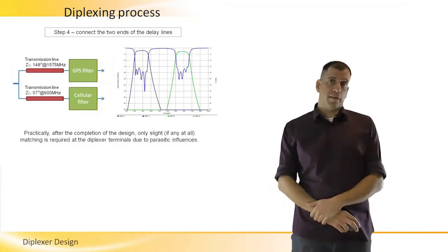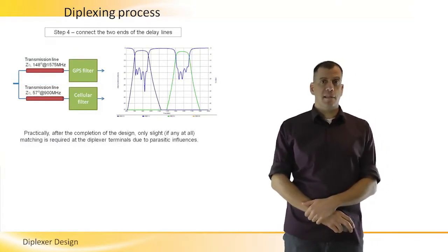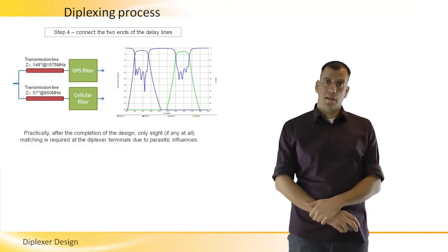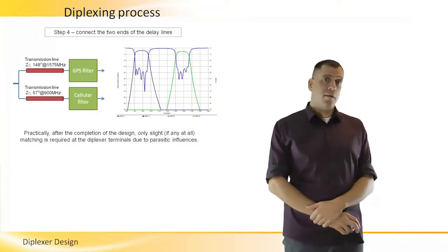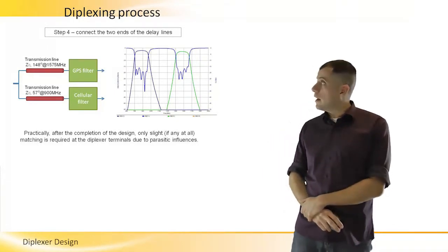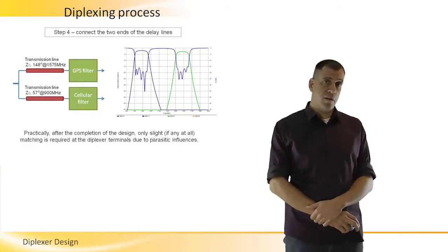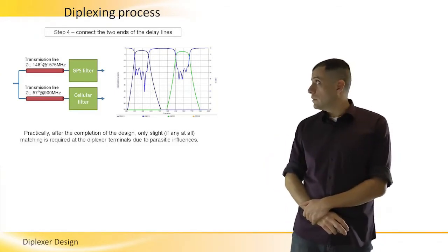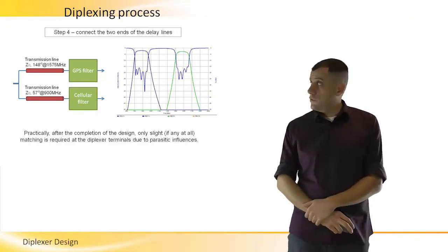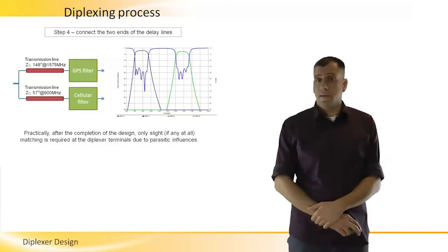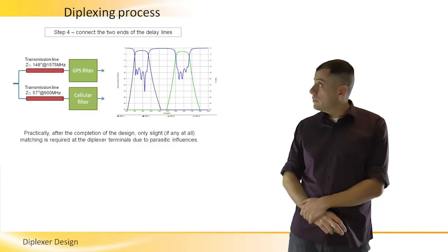Same from the GPS band. We designed the transmission line that reflects high impedance from the cellular side in the GPS frequencies. So 50 ohm in parallel to very high impedance is again around 50 ohm. That's why after the connection, the two filters still remain matched. The other frequencies though, have the rejection that they had previously, originally from the original filters. And that doesn't hurt by the connection in the midpoint.